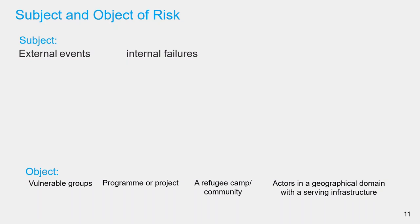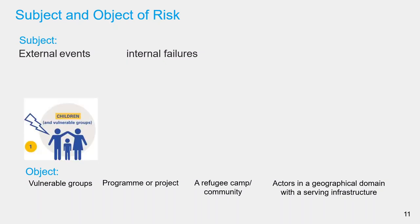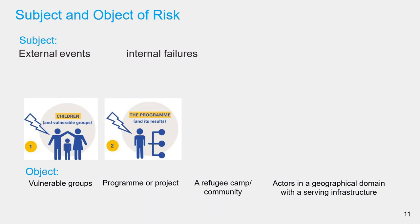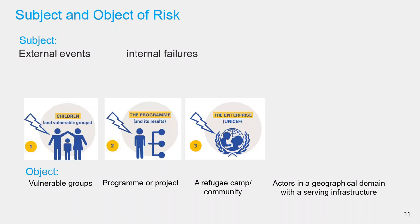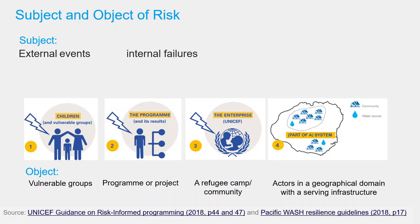The GRIP document gives specific examples of objects related to UNICEF's organization and activities: children, the program in a country, or the entire enterprise or a part of a system.